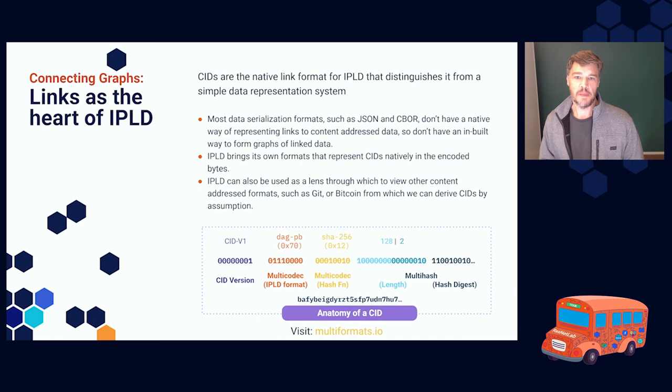IPLD brings its own formats, so data formats, that represent CIDs natively, so that when you decode, the CIDs emerge out of that data, because they are encoded directly into the data. But you can also use IPLD as a lens to view other content addressed data formats, such as git. And when you use an IPLD codec to decode git or bitcoin, etc, we can actually derive CIDs that say, this is a bitcoin format block, and it uses this hash function, because we know that from the bitcoin system, because it's an isolated system. So you could link across to git or bitcoin formats using CIDs, and you would get there, but then you're sort of stuck in that ecosystem.